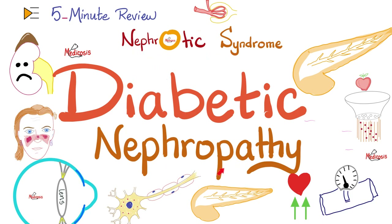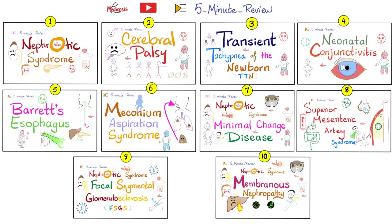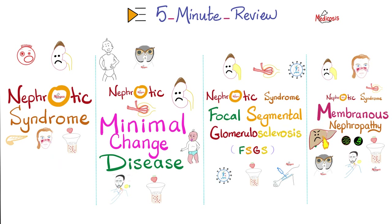It's time to talk about diabetic nephropathy, which is a subtype of nephrotic syndrome. There are many systemic diseases that can lead to nephrotic syndrome — one of them is diabetes, another is lupus, and a third is amyloidosis. In all of the previous videos, most of the time the kidney was the first organ to be affected, so we call those primary glomerulopathies. But when it comes to diabetes, the patient had diabetes first and then the kidney got affected, so we call it secondary glomerulopathy.